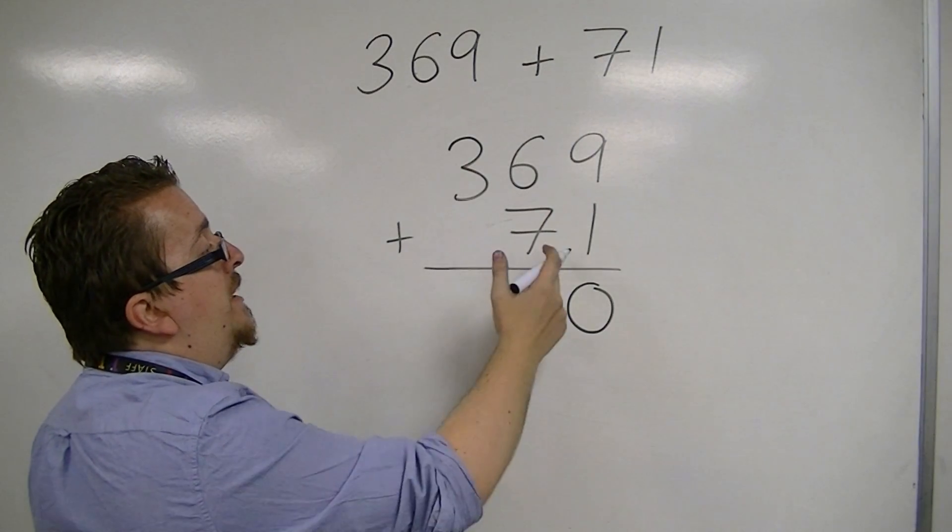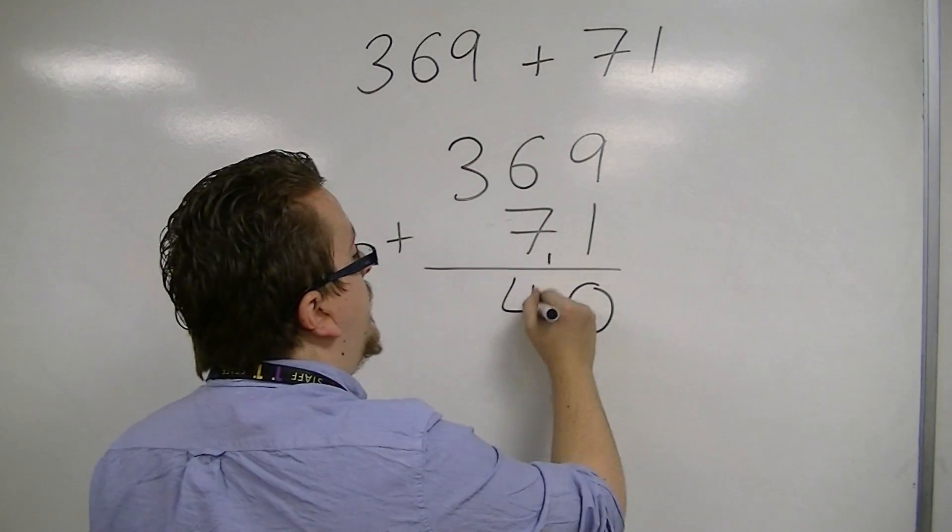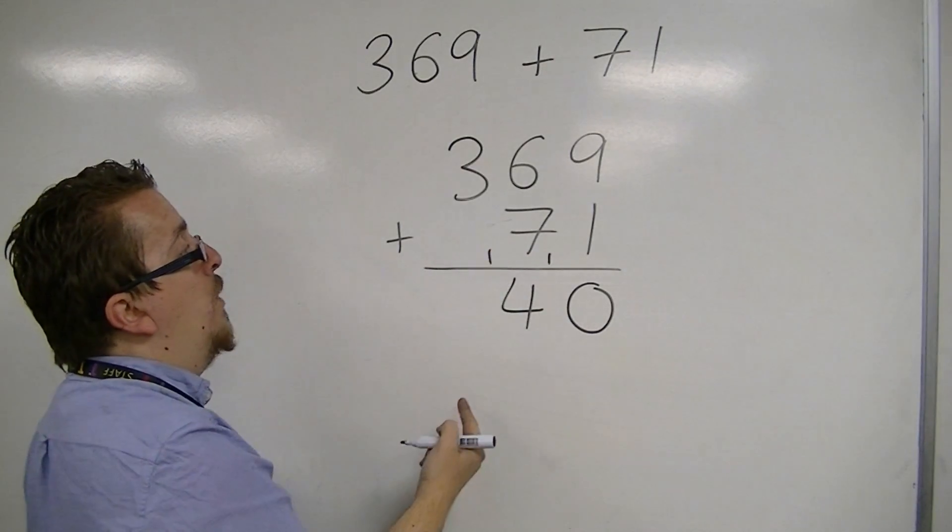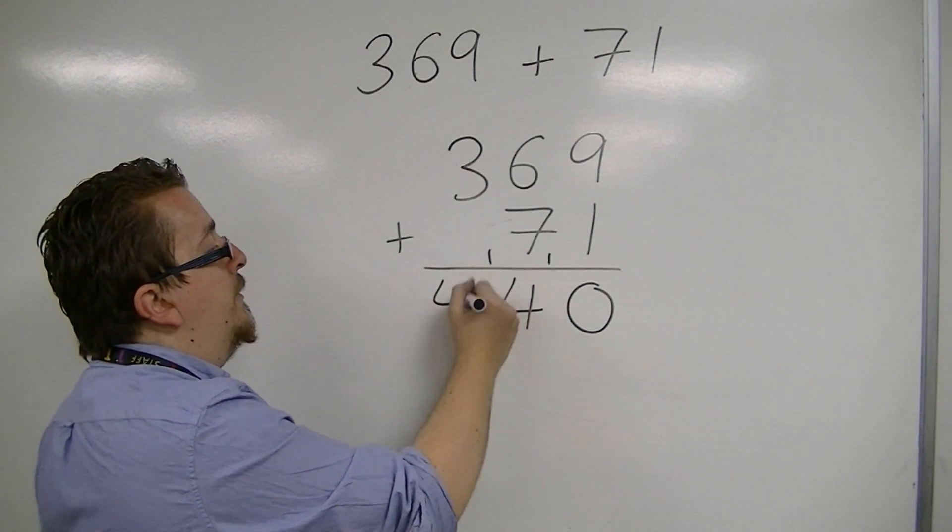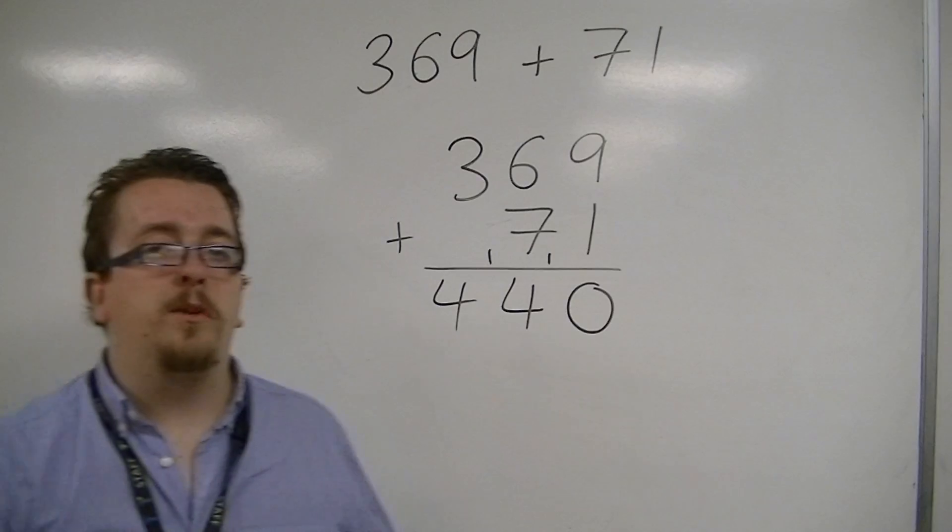6 plus 7 is 13, plus that extra 1 is 14. 4 carry the 1. 1 plus 3 makes the 4. So 440 would be the answer.